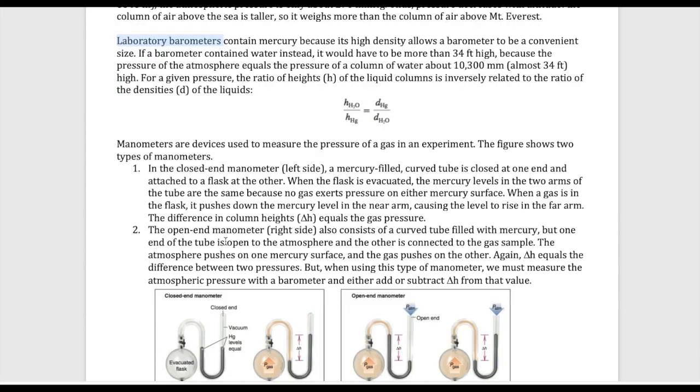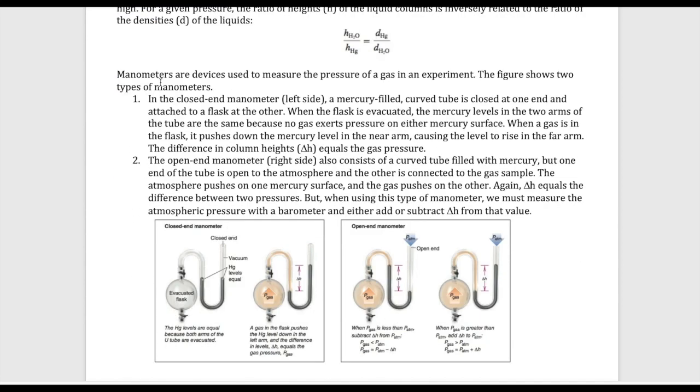Now the other instrument we use to measure pressure is something we call a manometer. This is used to measure the pressure of a gas that's inside a container, so it's not the atmospheric pressure. There are two types of manometers that we can see: there's something we call a closed-end manometer, and there's another one called an open-end manometer. The only difference is that with a closed-end manometer, this tube is closed at the end; with an open-end, they're open to the atmosphere.